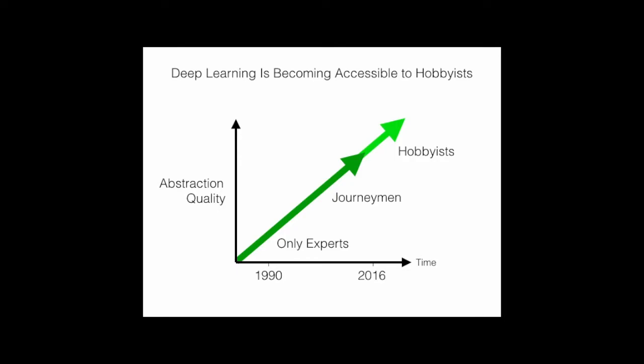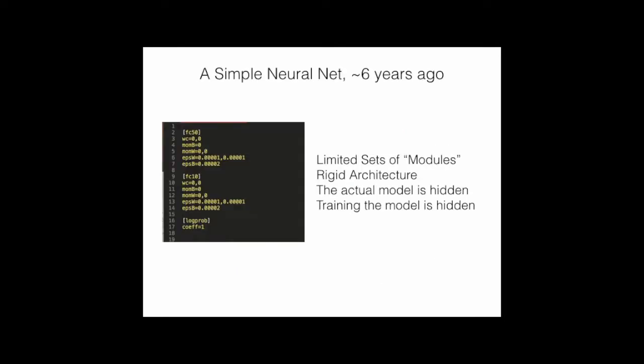Six years ago, what did it look like to train neural nets? This is one example from Caffe, where I'm specifying two layers: a fully connected layer with 50 units and one with 10 units. There are maybe seven or eight modules you could put in a particular order, so a very limited set of pieces to compose. The architecture is rigid—linear. You have to connect A to B to C to D. Something that bugs me is I don't get to see what's actually going on. I don't see what is a fully connected layer. I can't see inside or reason about it. Most importantly, if something's wrong, I can't figure out what to fix. How the model is trained on data is completely hidden.